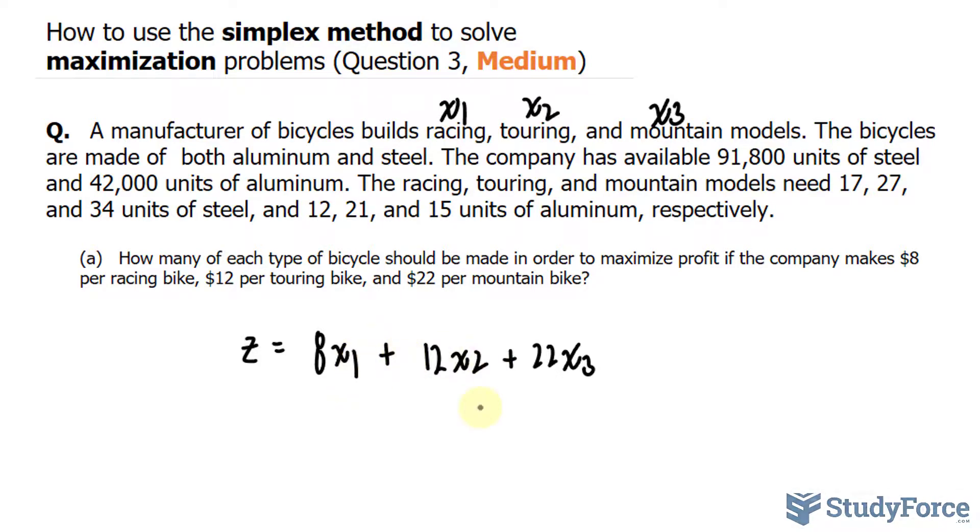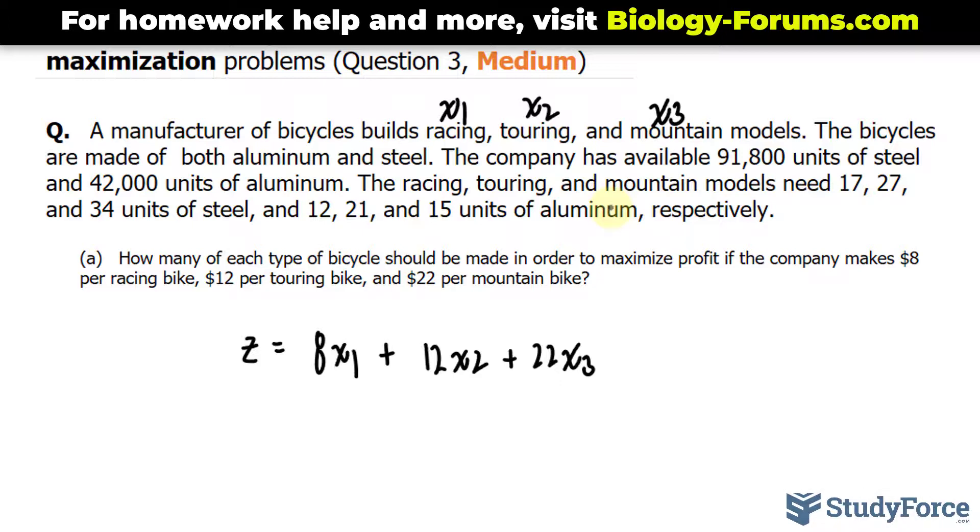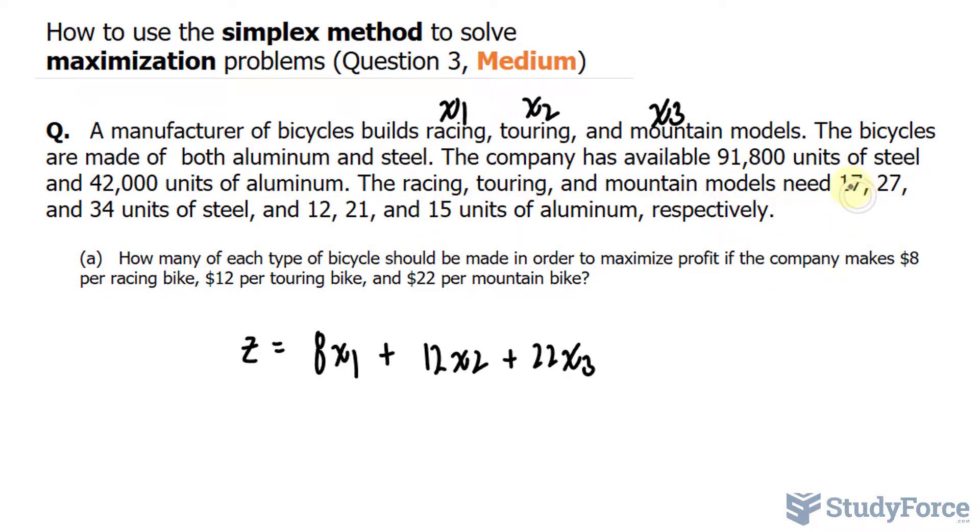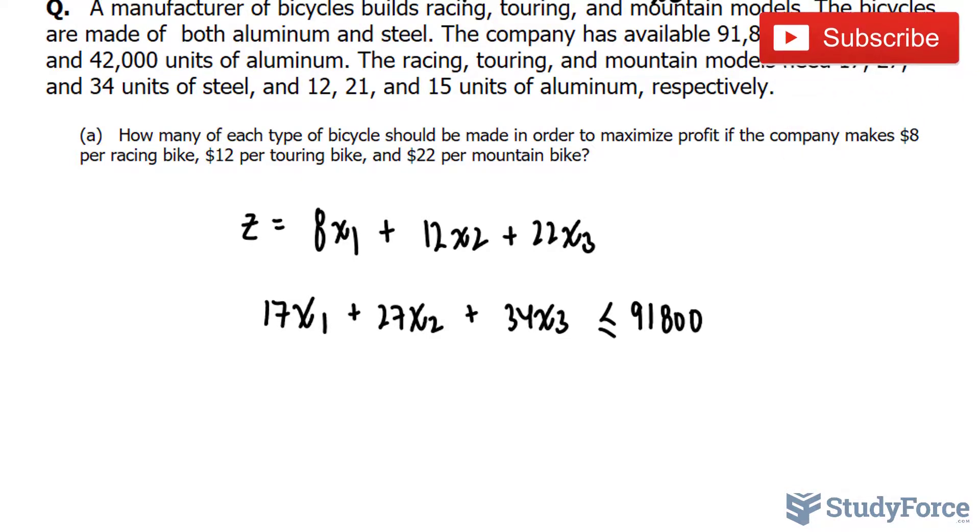So this right here is our objective function. Of course, we don't know what X sub 1, X sub 2, or X sub 3 are and that's what we're looking for. The constraints can be modeled using these two sentences. So we're told that 91,800 units of steel are available. You cannot go beyond that. That's the maximum. In addition, we're told that for the bikes, you need 17, 27, and 34 units of steel. So we'll write down 17X sub 1 plus 27X sub 2 plus 34X sub 3, that amount cannot exceed 91,800. So it can equal 91,800 and that's why we have the less than or equal to 91,800. Similarly, another one can be modeled for aluminum. We can write down 12, 21, 15 with the same variables and that cannot exceed 42,000.